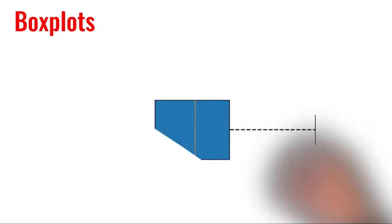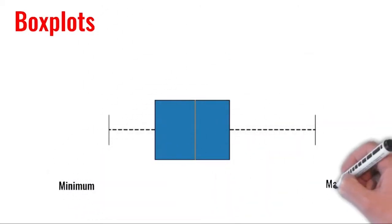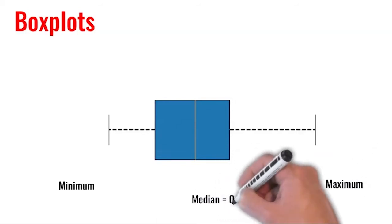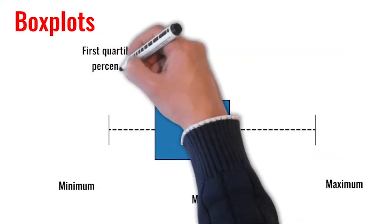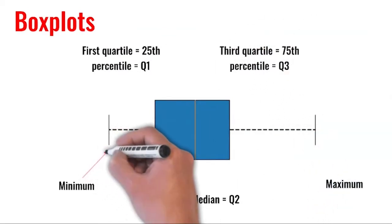The middle part of a BoxPlot represents the quartiles of the data. Quartile 1 is the 25th percentile, quartile 2 is the 50th percentile which is the same as the median, and quartile 3 is the 75th percentile.